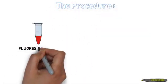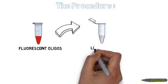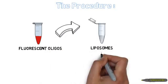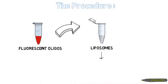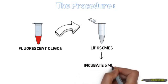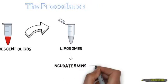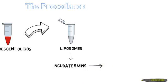Firstly, to prepare the glowing liposomes, I will mix an equal amount of the fluorescent oligos and the liposomes. Let this mixture incubate for 5 minutes to allow the oligos to go inside the liposomes.